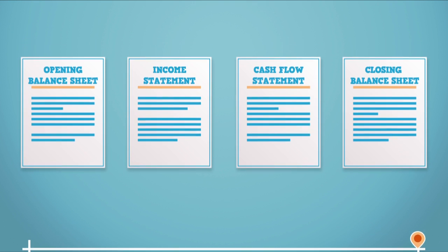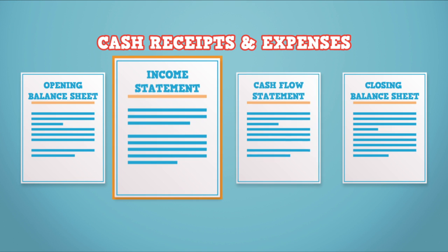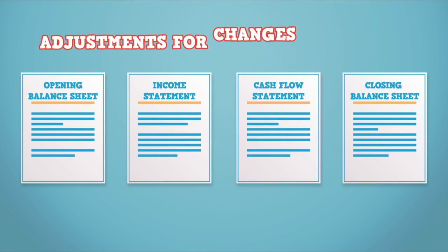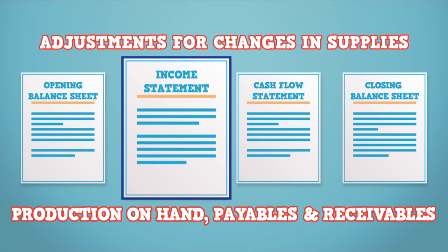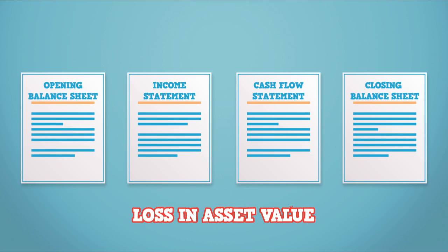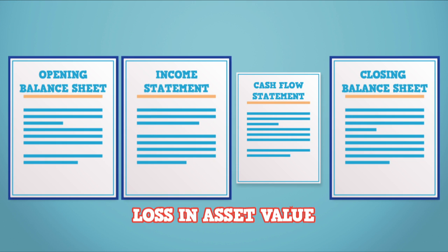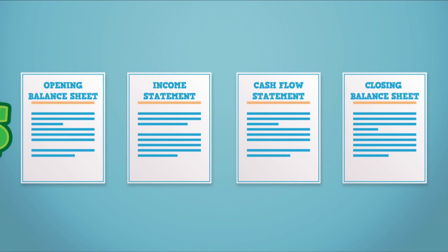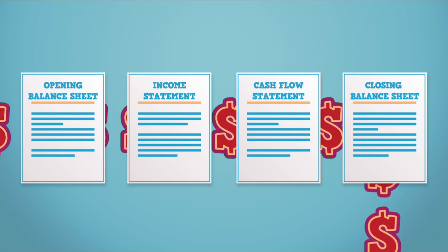All three of these statements are closely linked. For example, cash receipts and expenses appear on both the income statement and cash flow, while accrual adjustments for changes in supplies, production on hand, payables, and receivables show up on both the income statement and balance sheet. A loss in asset value due to depreciation will be captured in the change from the start of the year to the end of the year on the balance sheet, and this amount is also entered as a non-cash expense on the income statement. Additionally, good prices add to cash flow and equity through retained earnings. When good things or bad things happen to the business, they ripple through all of the financial elements.